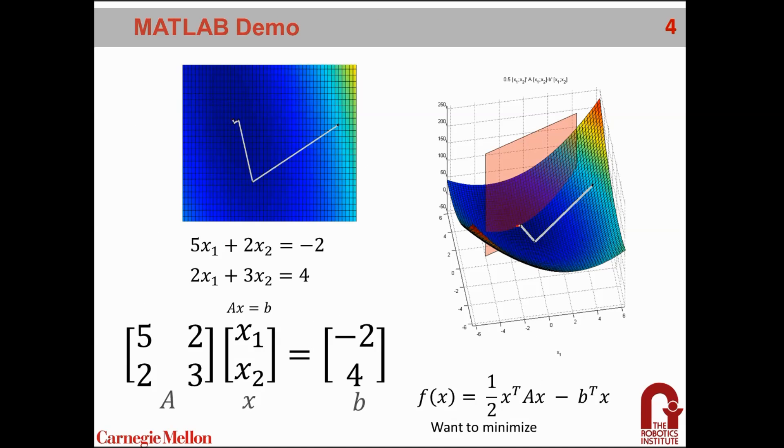We'll take a look at a MATLAB example of this. Here we have two equations: 5x1 plus 2x2 equals minus 2, and 2x1 plus 3x2 equals 4. This system of two equations can be written in the form ax equals b in this matrix form here. The goal we want to do is find a solution to this problem by minimizing its quadratic form.